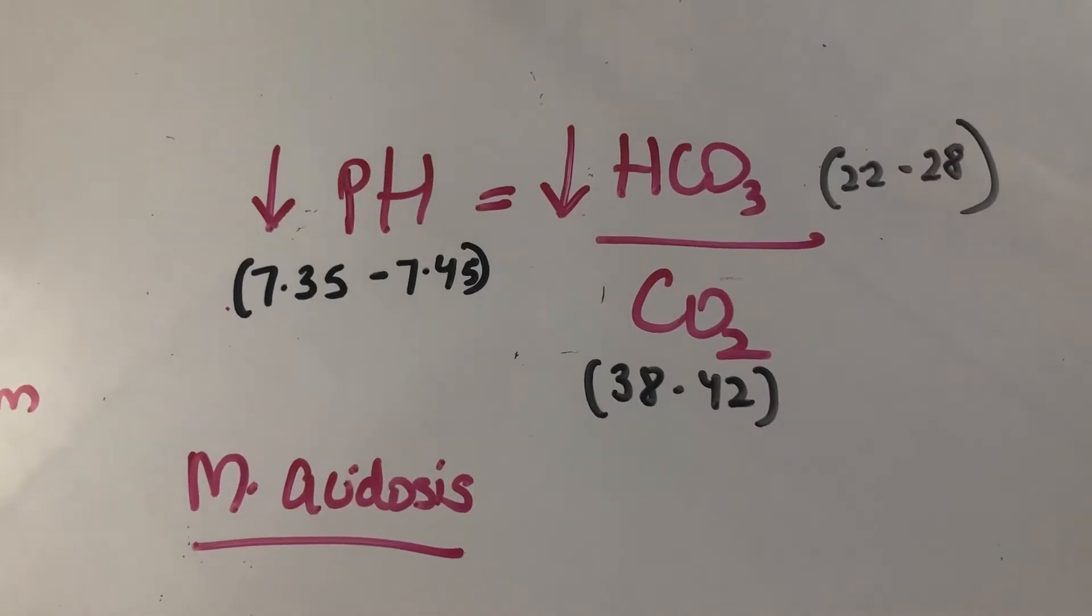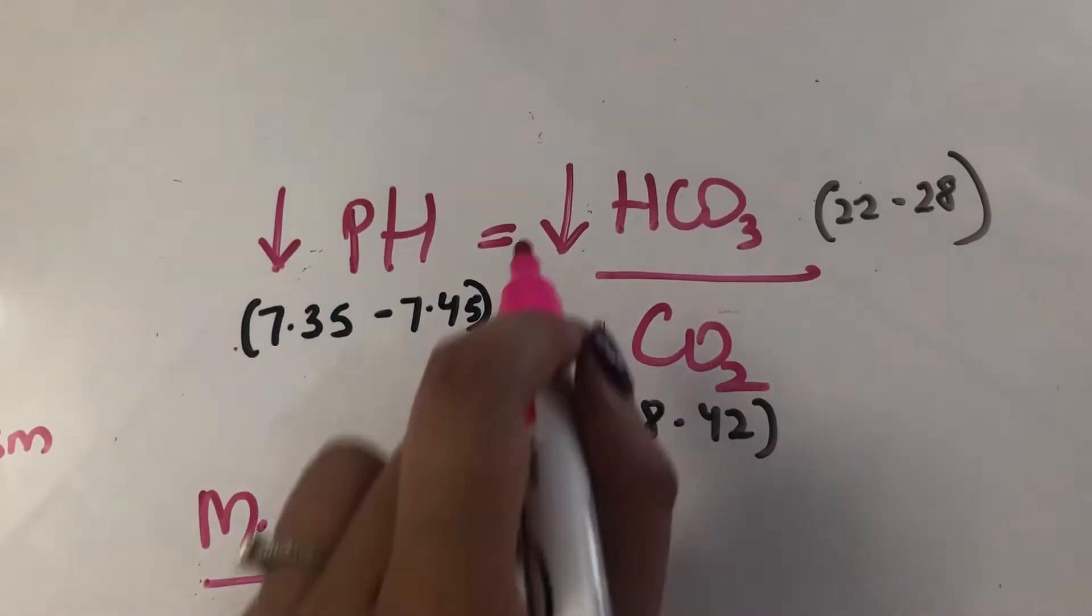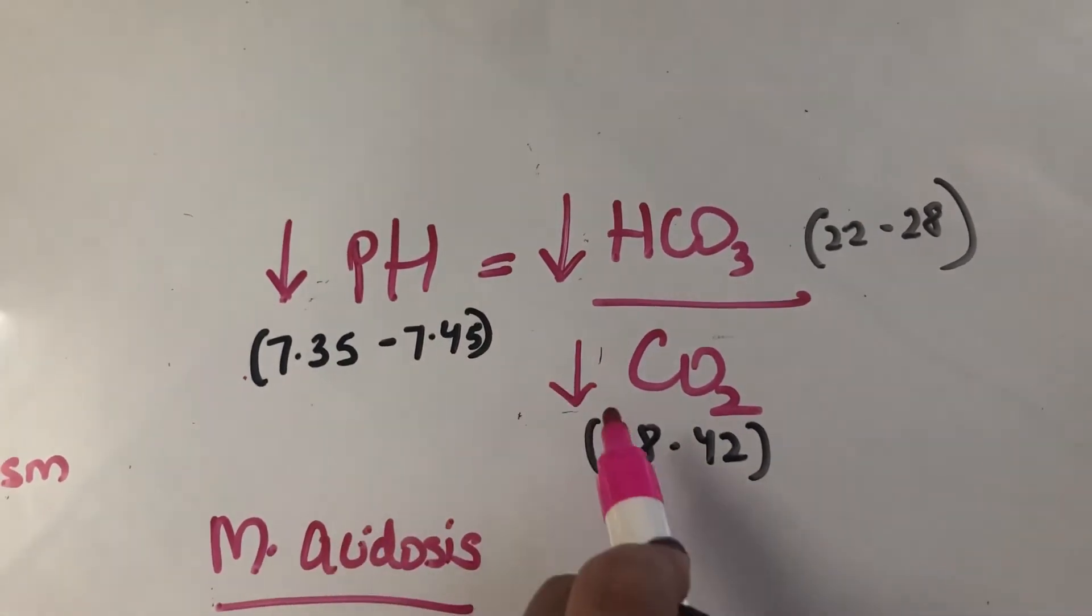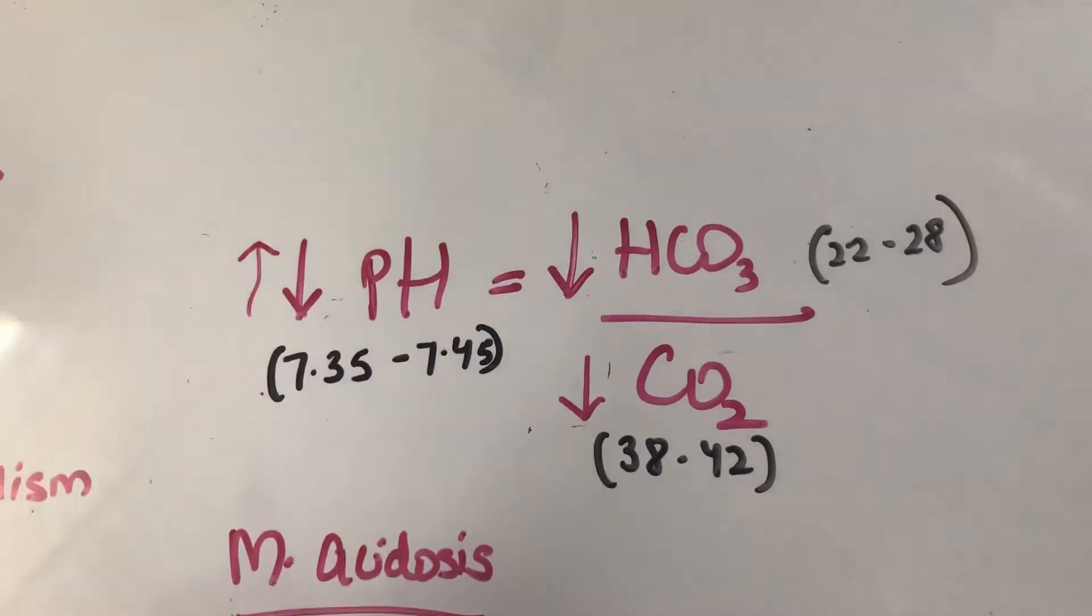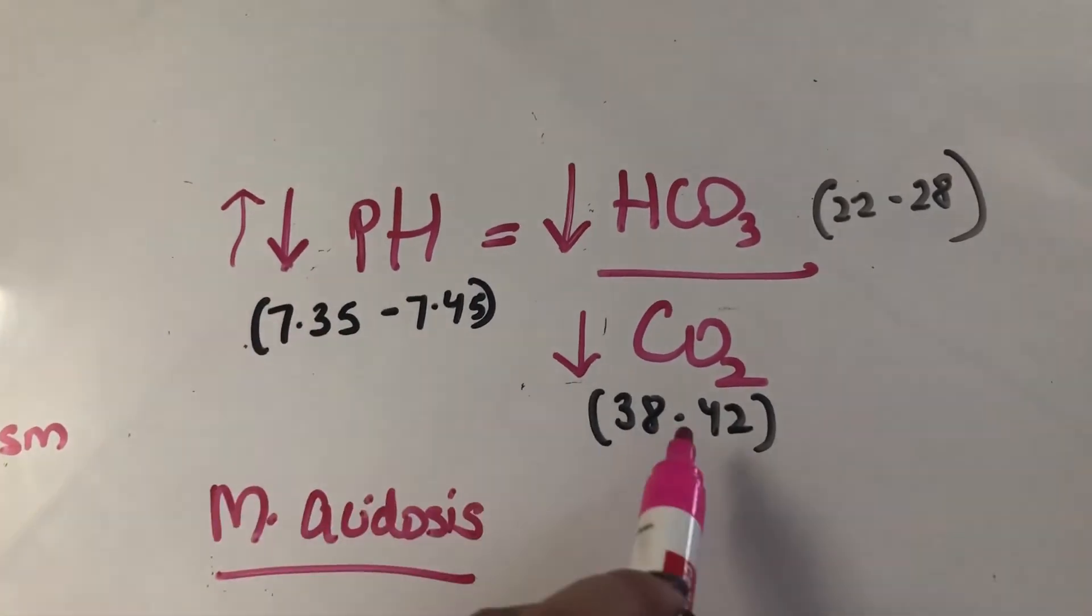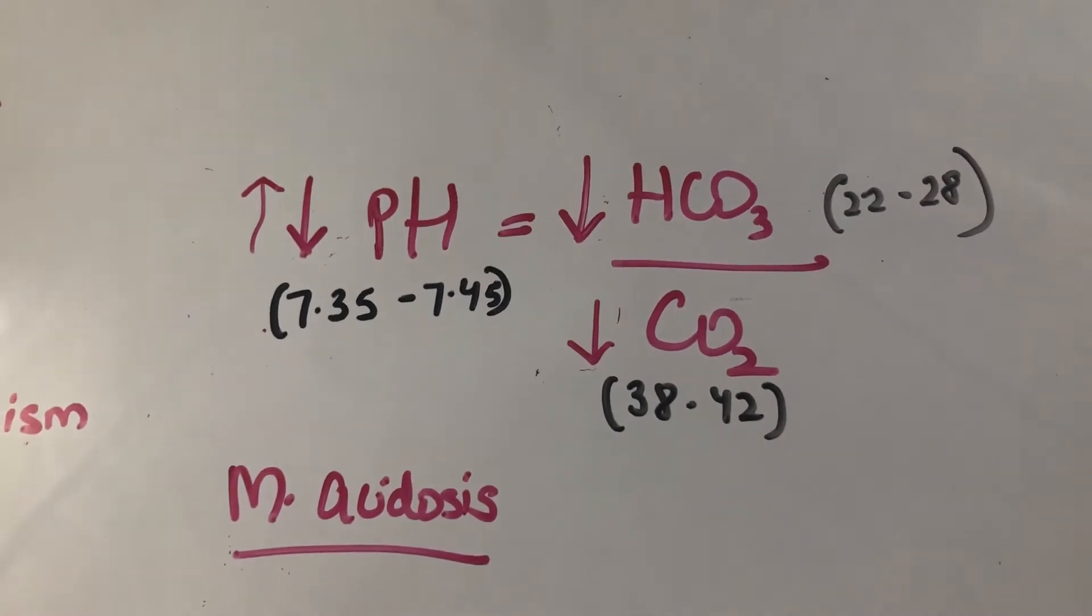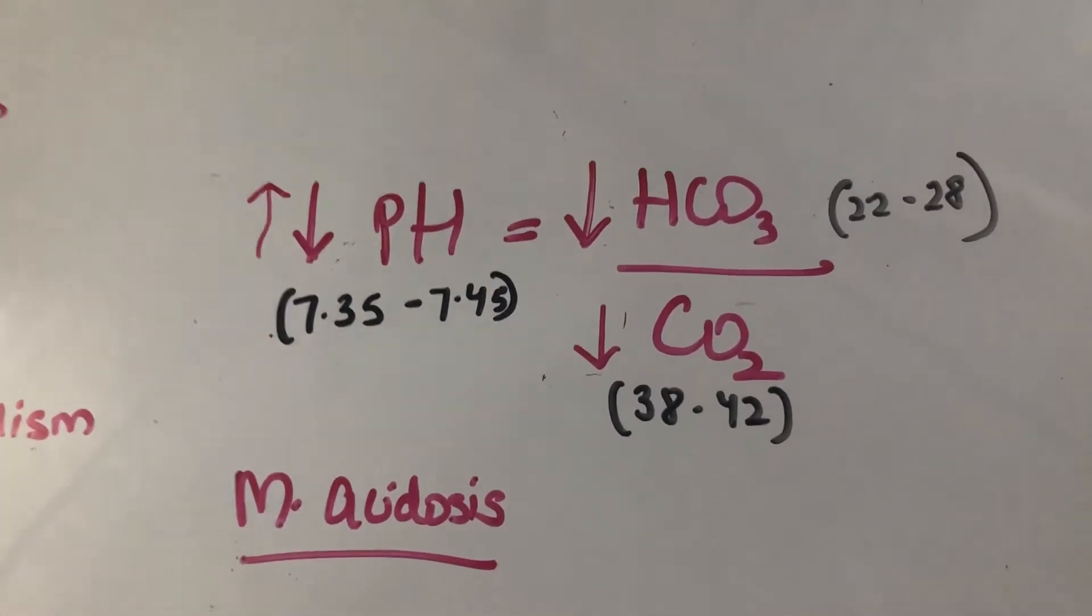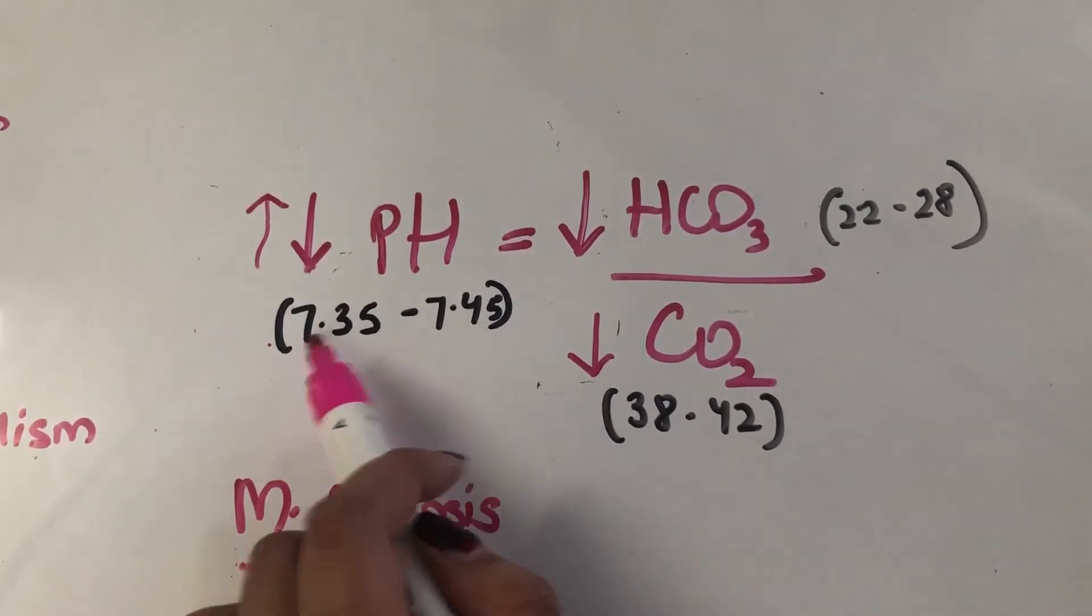And how can we compensate for that? Well, we can bring the carbon dioxide down. So if this comes down, the pH has no choice but to go up because it's inverse. So how do we bring the carbon dioxide down? We hyperventilate, right? We breathe super fast like we're having an anxiety attack. So when we do that, the pH will come back up to the normal range.